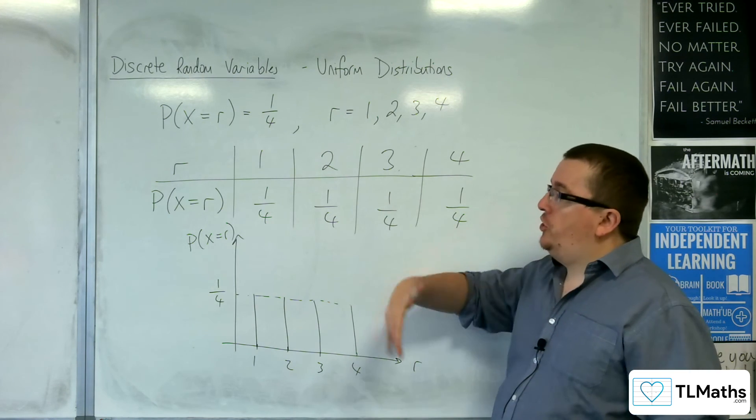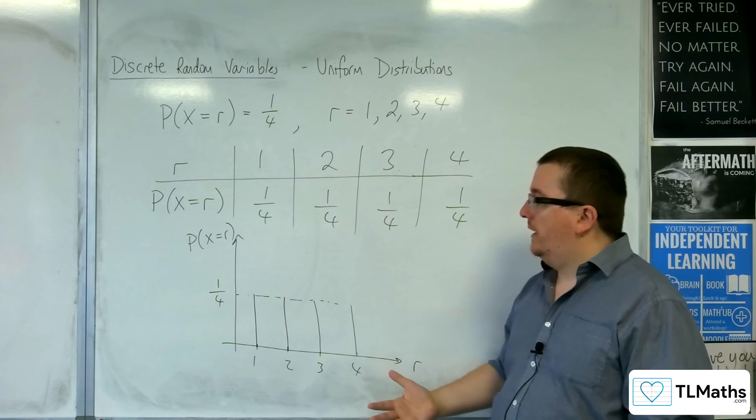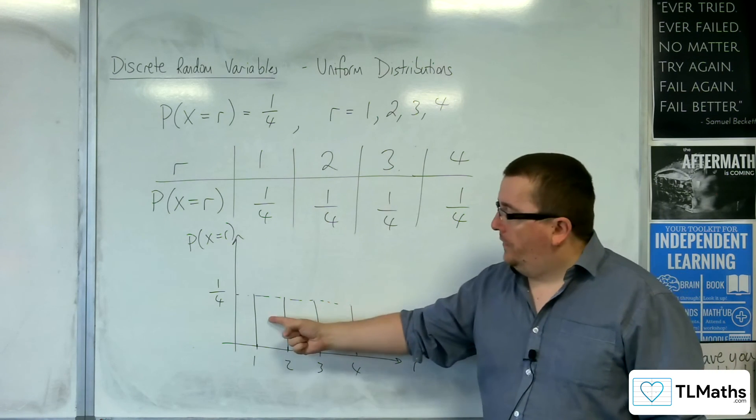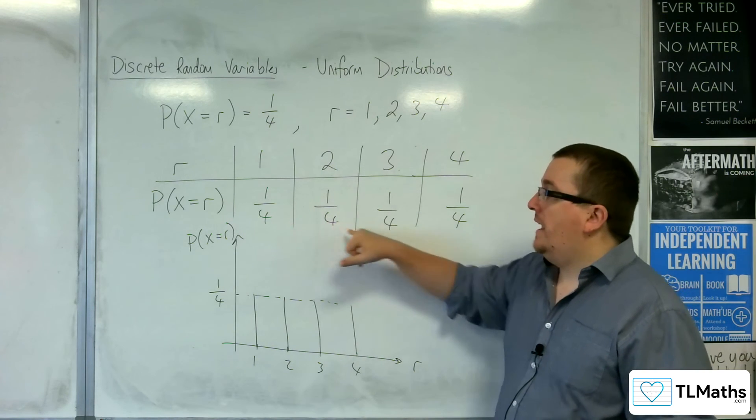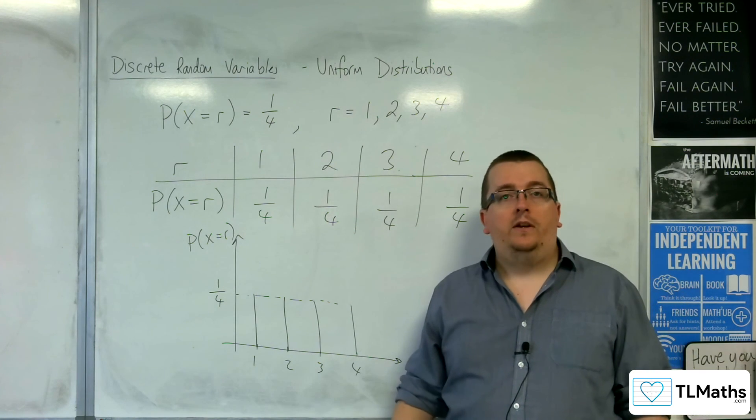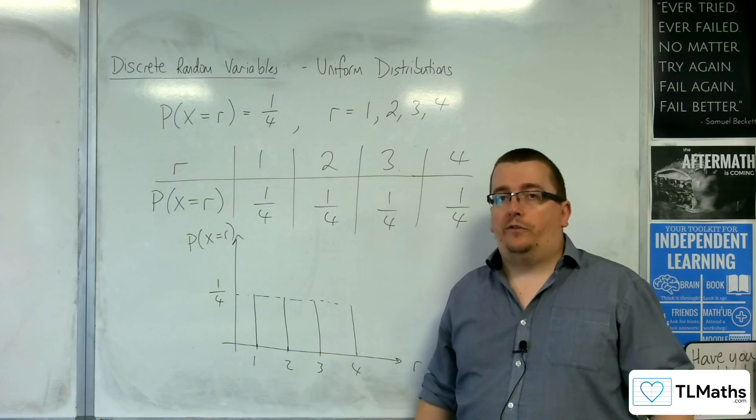So if a question involved that, you would know exactly that the height of each of the bars is the same. The probability here would have to be the same in all cases. That's how you can use that fact.